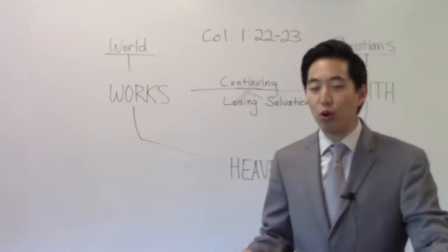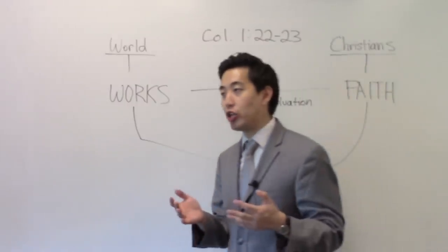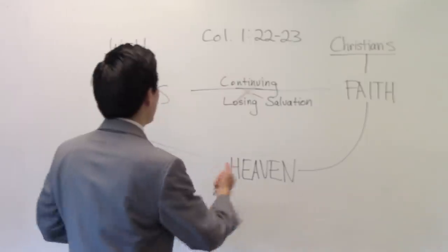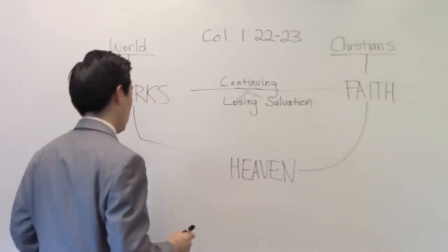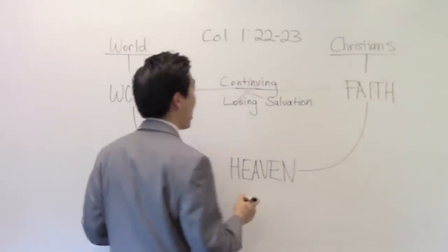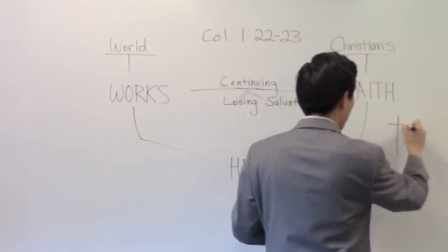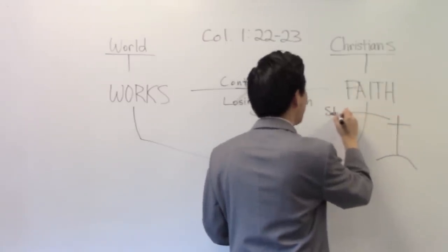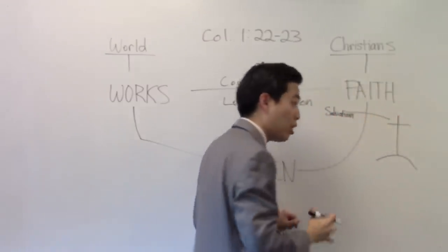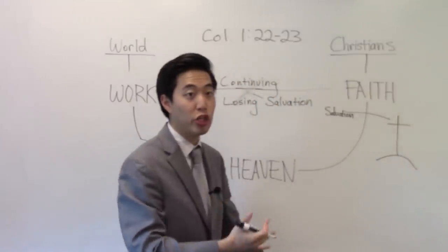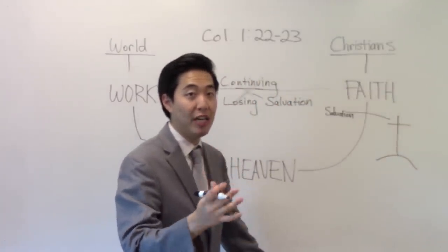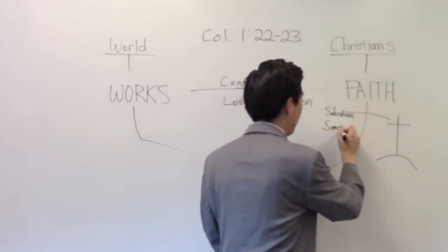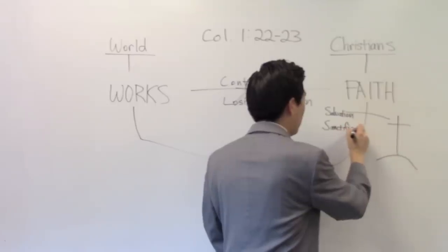When Christ died on the cross for us, did it only give us salvation or did it give us so much more? See? Here's the thing. This is a basic doctrine that you learn in Sunday school. When Christ died on the cross for us, his cross not only gave us salvation, but it gave us many other things like justification, redemption, remission, imputation, blessings. But here's another thing people don't think about. It also gave us sanctification. Oh, amen.